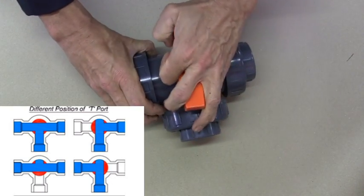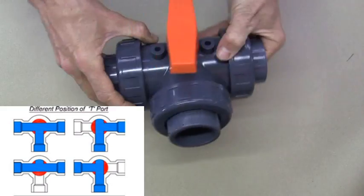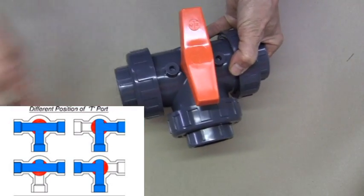If we turn it the other way we find that this side is now blocked off and the fluid can only pass this way.